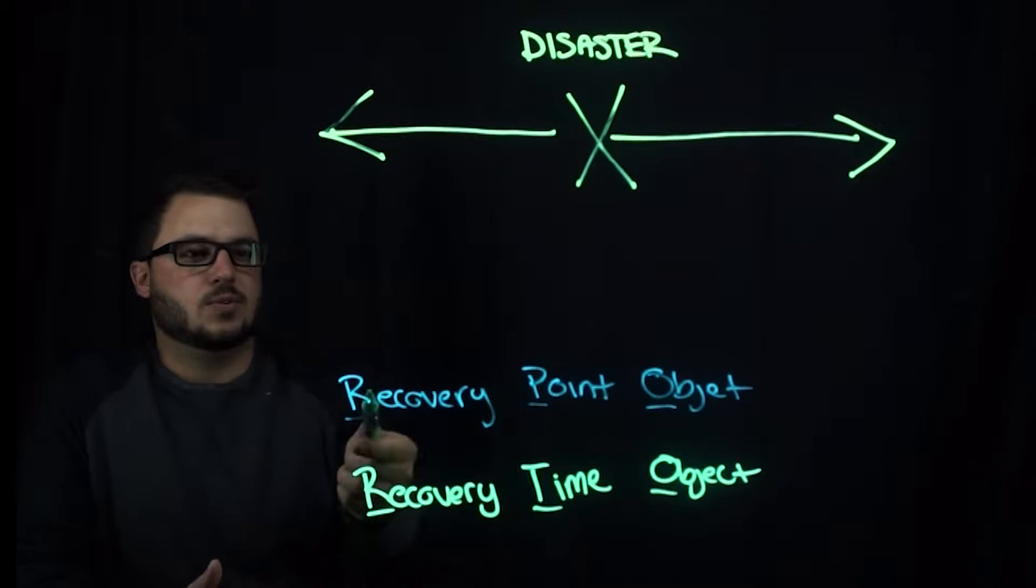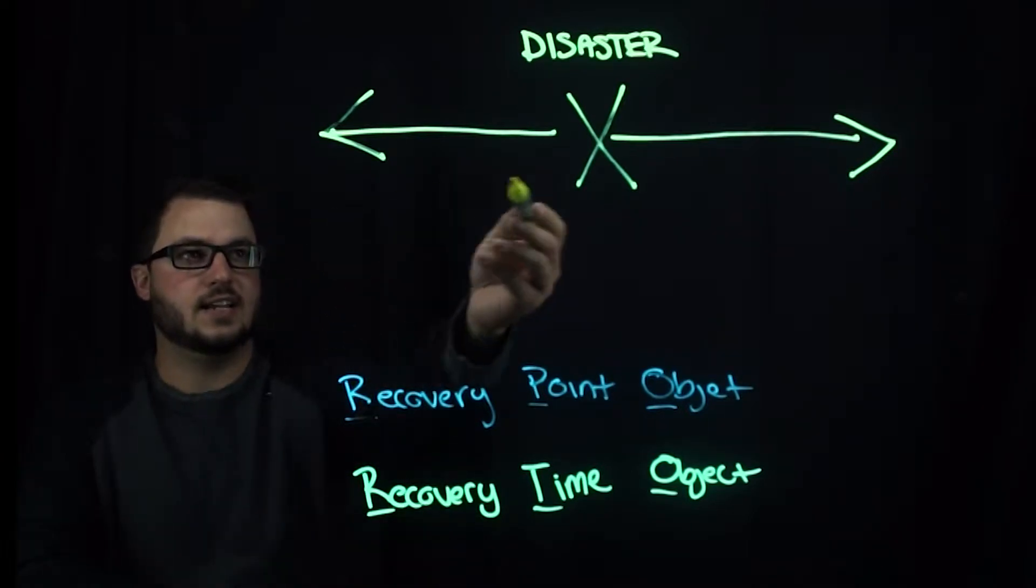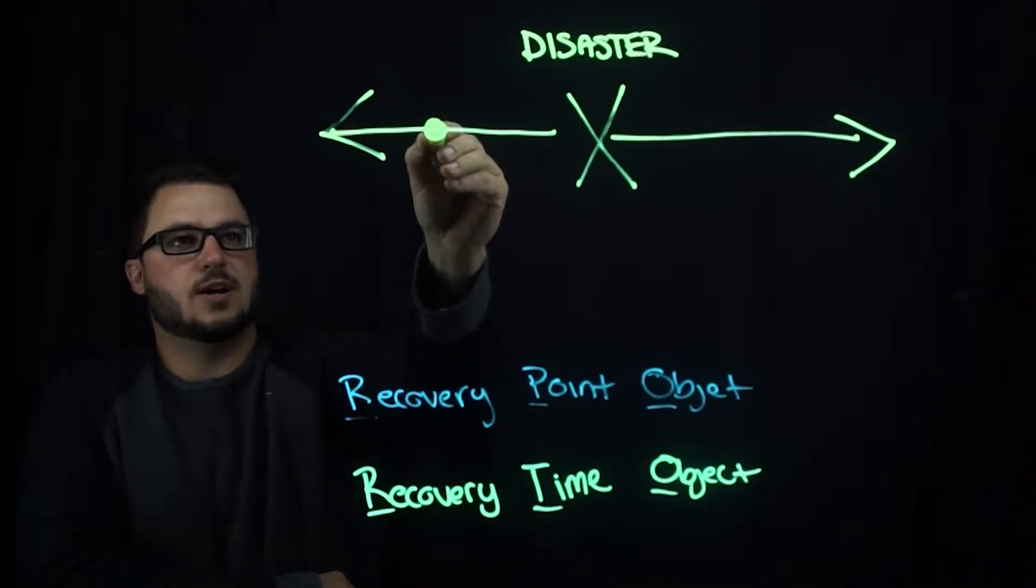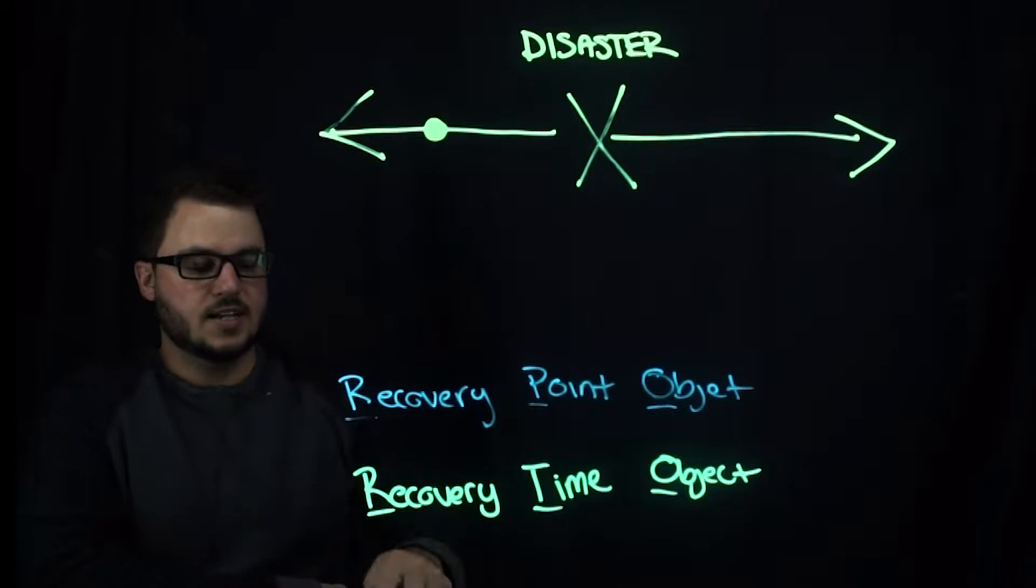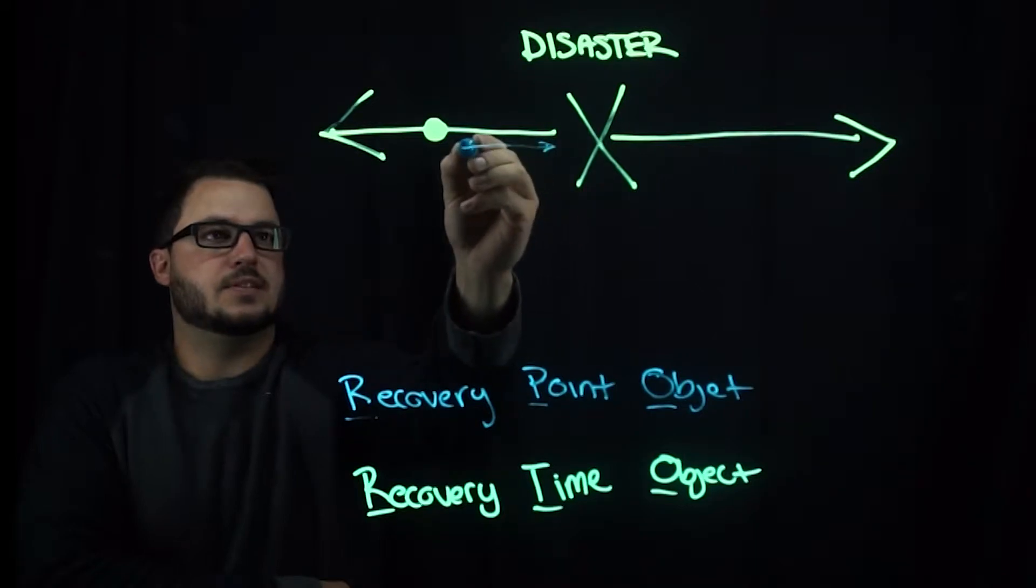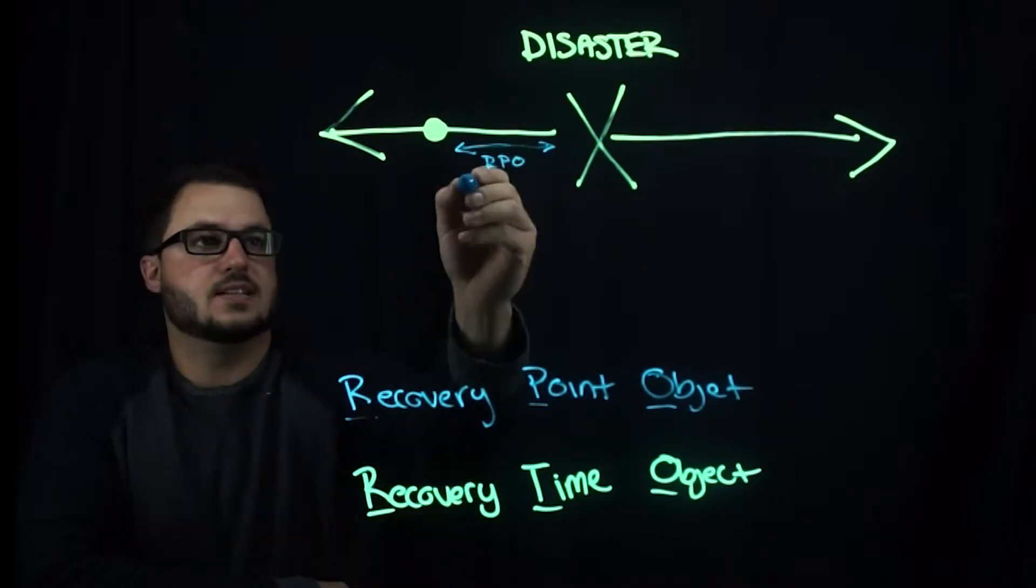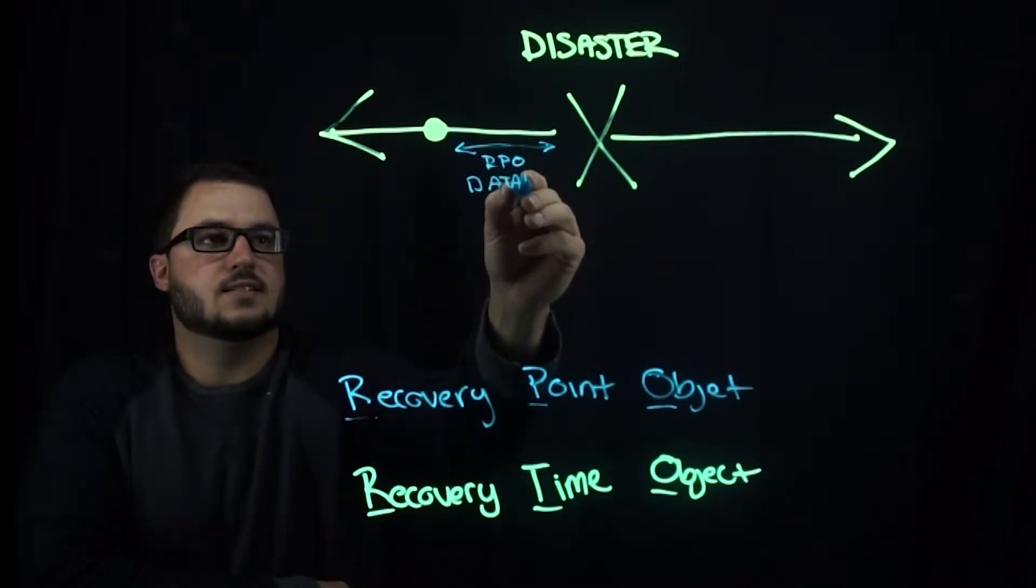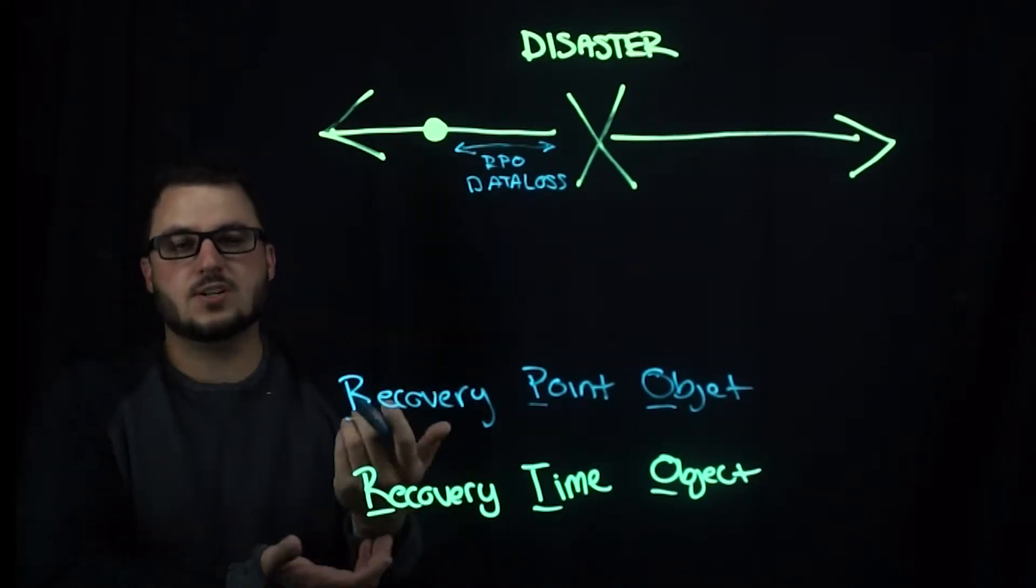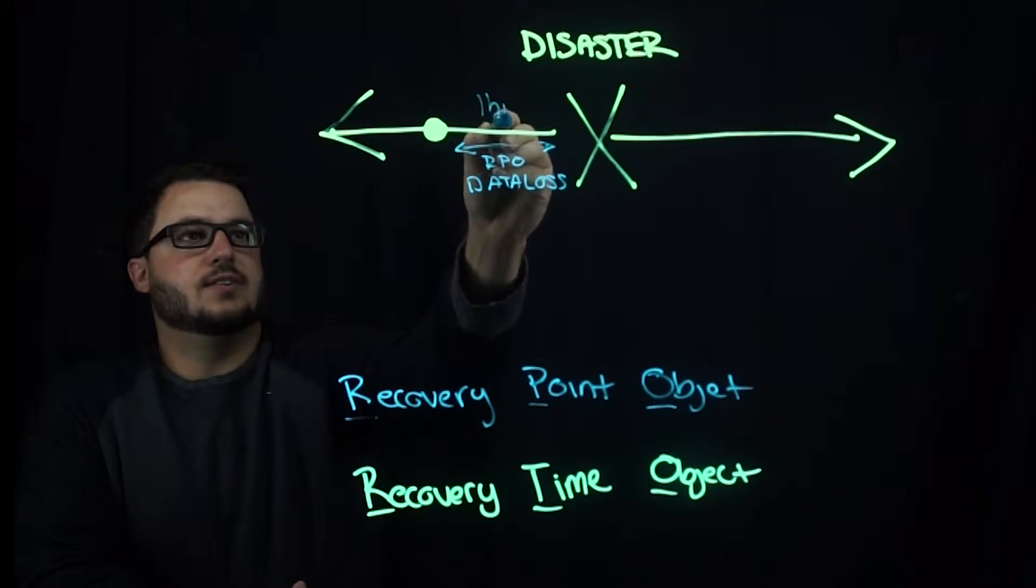We're going to cover recovery point object first. Let's say we have an application here that incurs a disaster somewhere along this timeline. We have a latest backup somewhere around here. This little timeline here, this little gap represents our RPO, and this also represents data loss. What I mean by that is if your backup is every two hours and our disaster occurs one hour after that, you have about one hour of data loss.